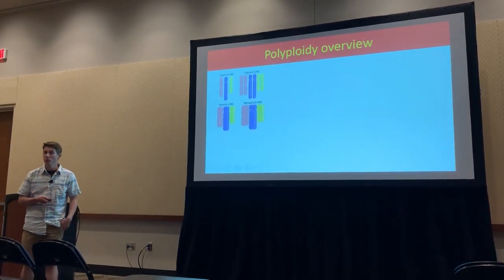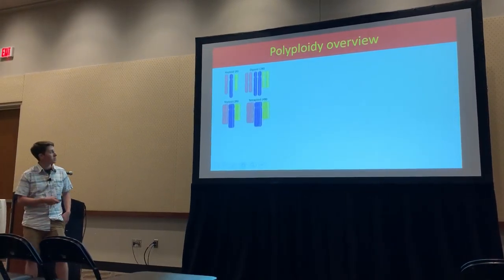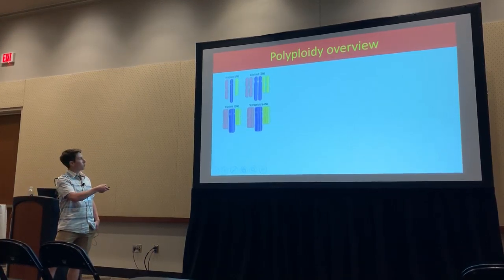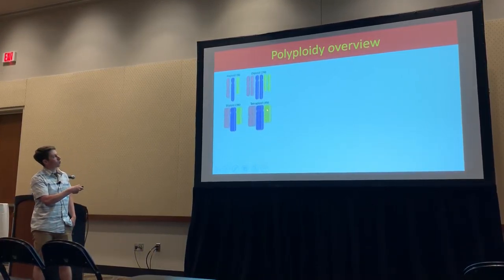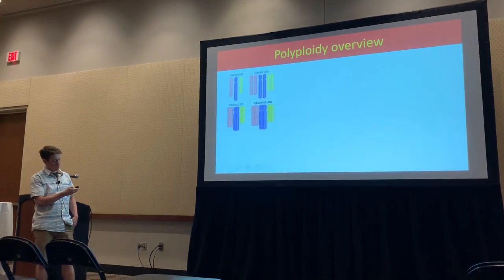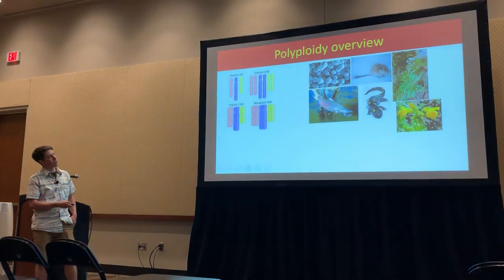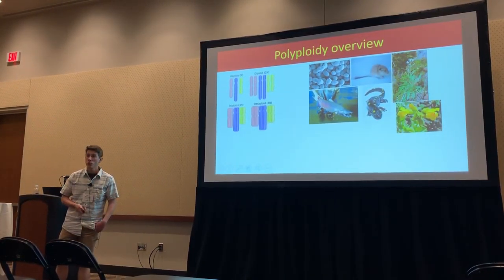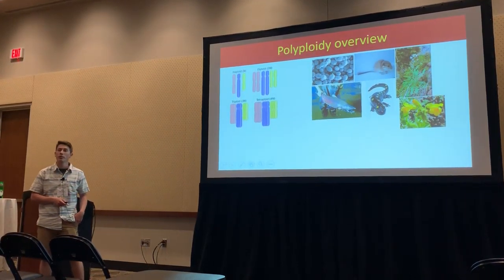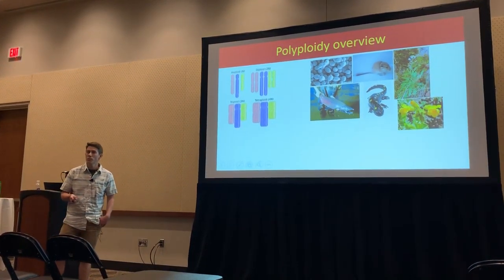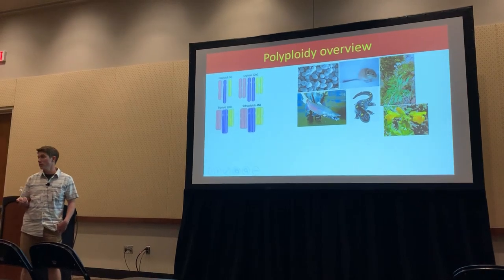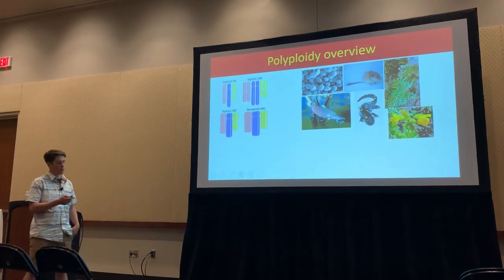Just a brief review of polyploidy: it simply refers to the presence of additional chromosomes. Whereas we are, of course, a diploid species, polyploids are found across the tree of life, being particularly prevalent within the plant kingdom. Rough estimates suggest 30 to 80 percent of current living plant species are polyploid.